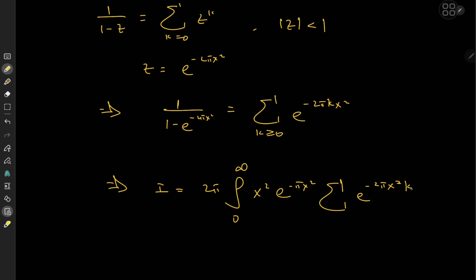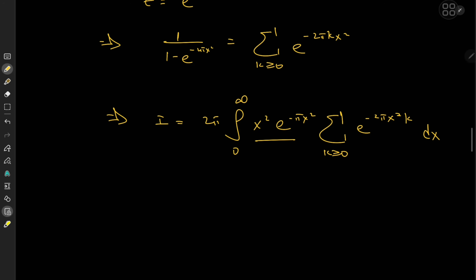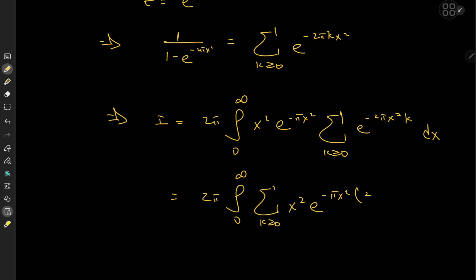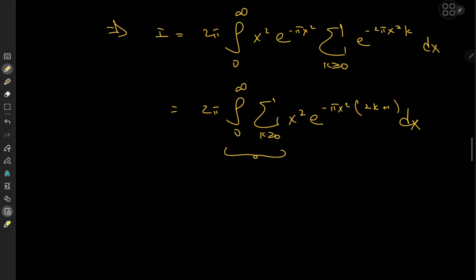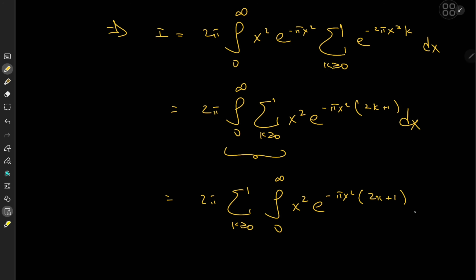The x² and e^(−πx²) terms are independent of the index variable k, so we can take them inside the summation. This gives us 2π times the integral from 0 to infinity of Σ(k=0 to ∞) x² · e^(−π(2k+1)x²) dx. We can now switch the order of integration and summation to write this as 2π times Σ(k=0 to ∞) of the integral from 0 to infinity of x² · e^(−π(2k+1)x²) dx.